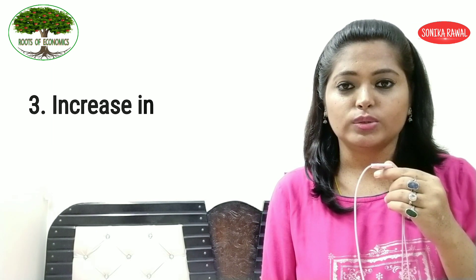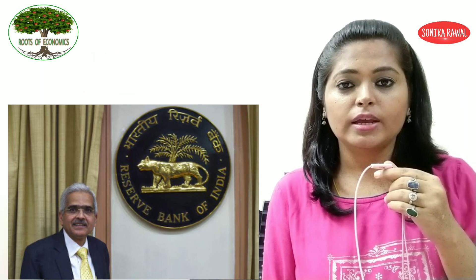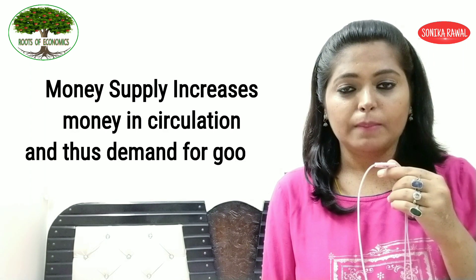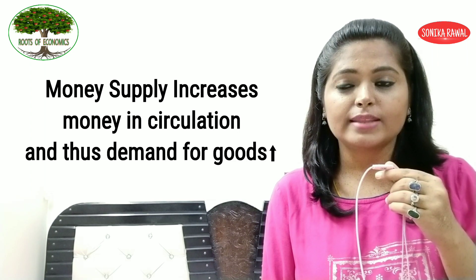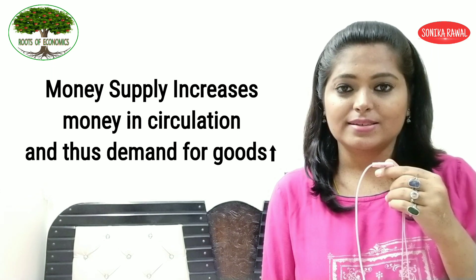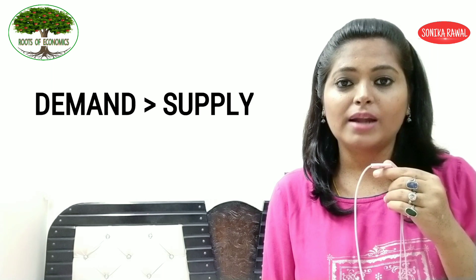The third reason is increase in money supply. Who regulates money in the economy? RBI — if we talk about our country — or the Central Bank. If the Central Bank has increased money supply, people get more loans. If people have more money, they will spend more. So again, given the supply, demand is rising.